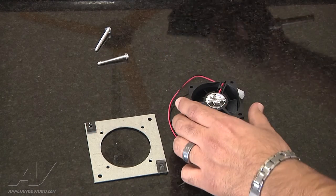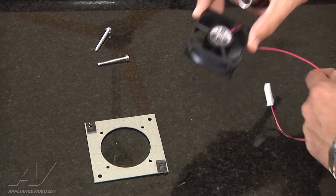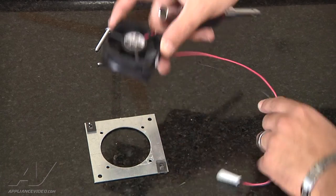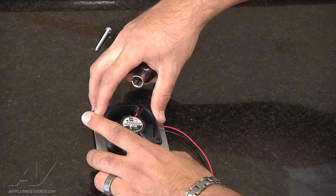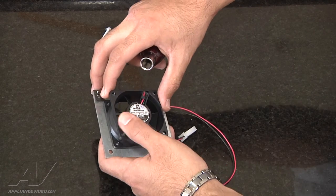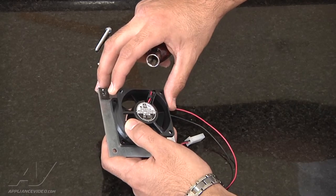Now set the old fan motor aside and install the new fan motor on the bracket. Line up the screw holes with the openings.